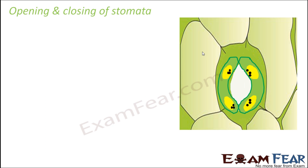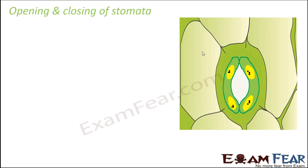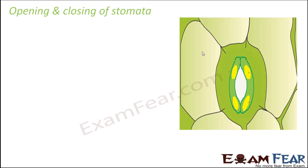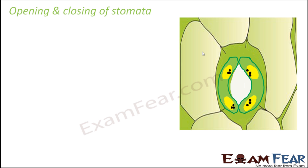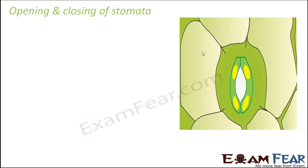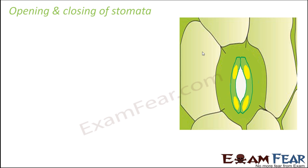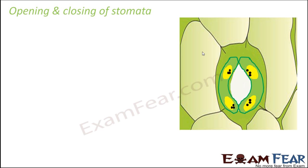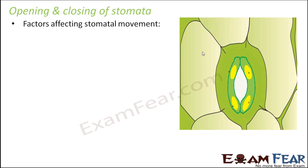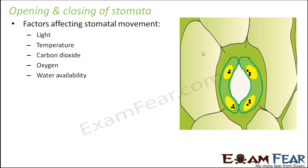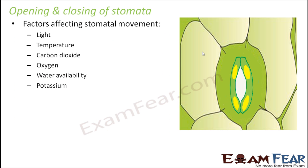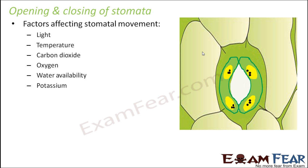Let's see how exactly this works. You can see the two guard cells coming closer to each other, and then the stomata closes. When they move away from each other, the opening increases and more space is created for gas exchange. There has to be something controlling the guard cells, because guard cells are not magical — there are factors which affect this movement. Some of the important factors are light, temperature, carbon dioxide, oxygen, water availability, and potassium concentration. These factors govern the movement of the guard cells.